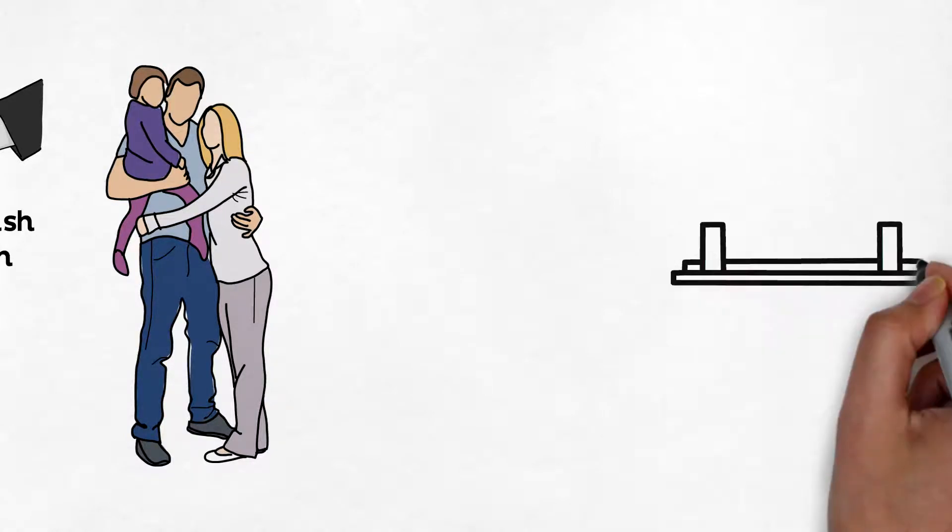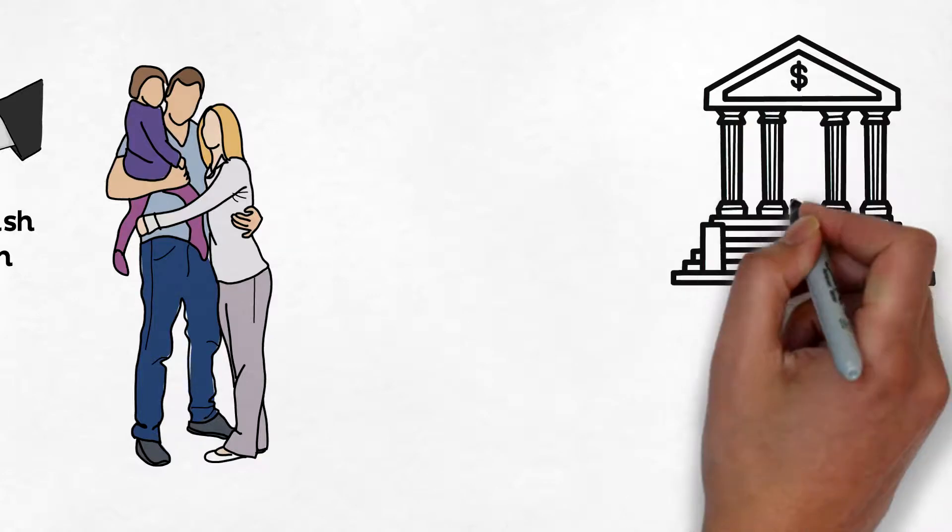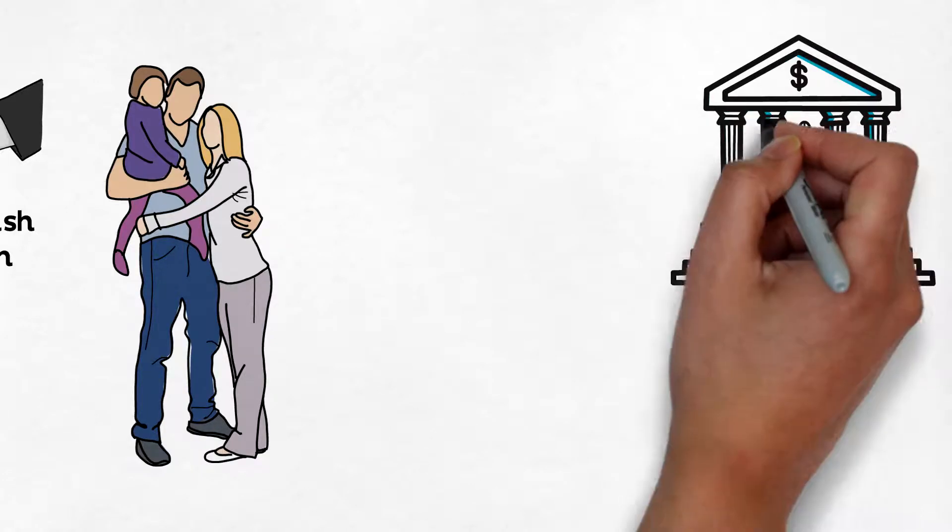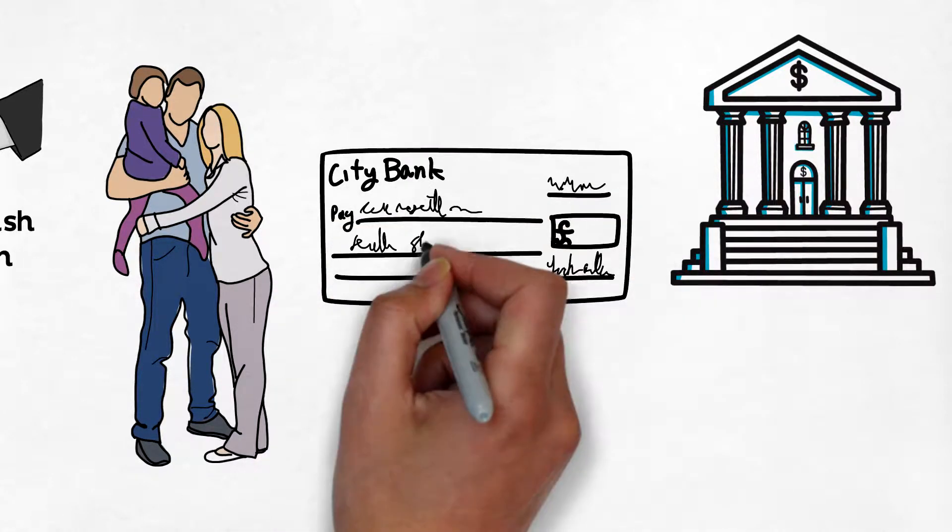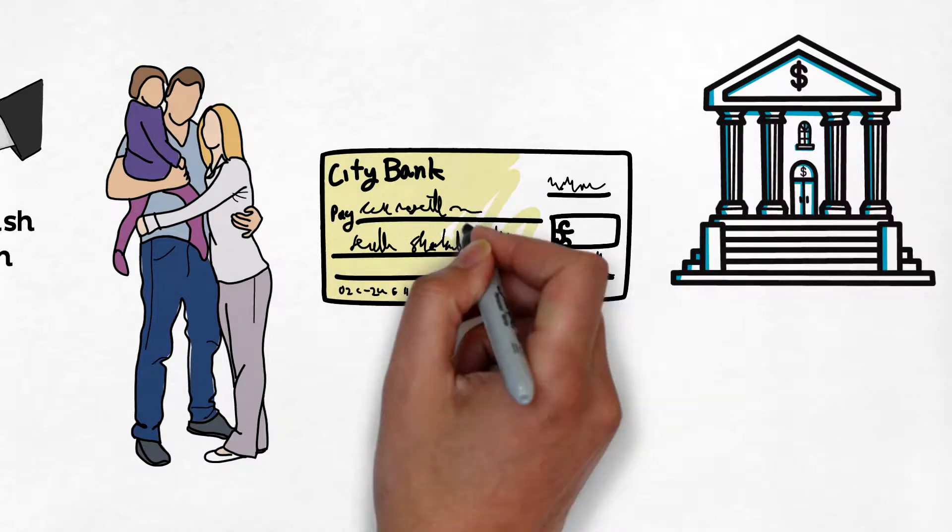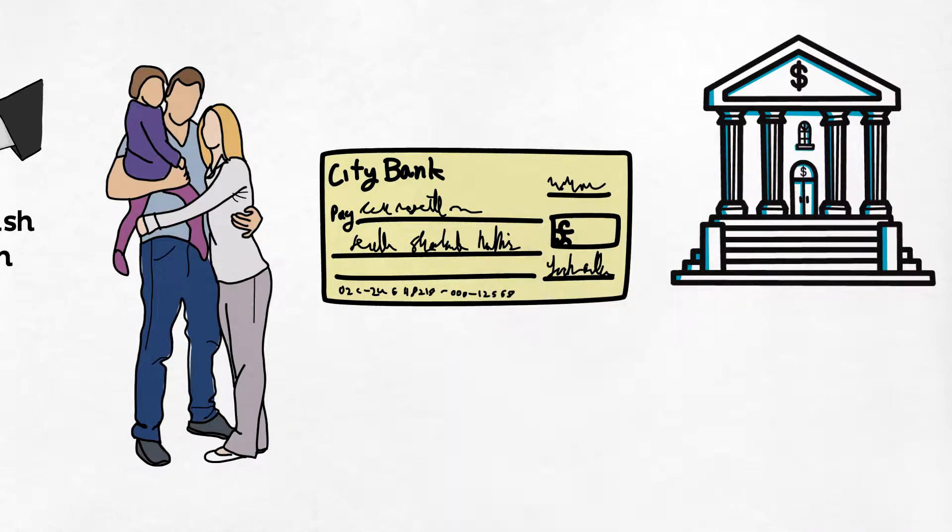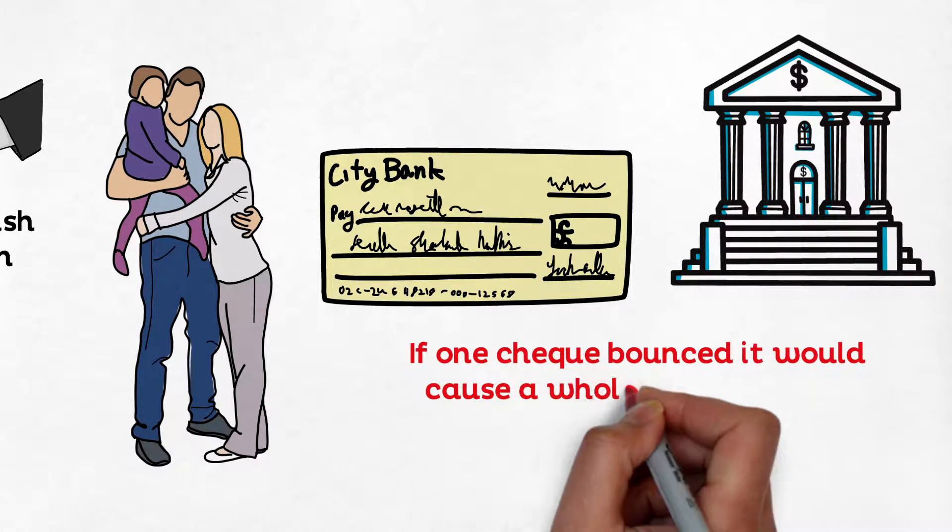The problem Phil faced at that time was a huge inventory he had to carry and the bank loans. Shoe businesses required to carry a huge inventory and hence required huge cash influx. He used to run a very thin operation by using his credit wisely, actually almost dangerously. If one of the checks bounced, it would cause a whole series of events.